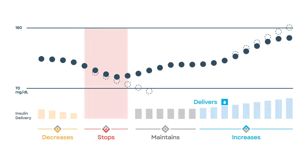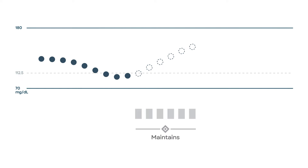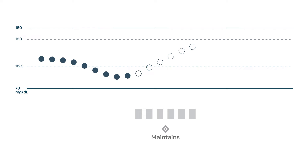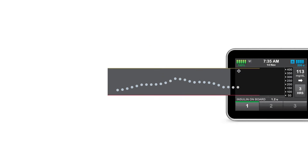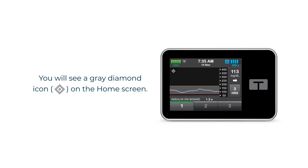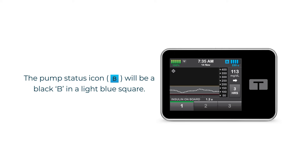When your glucose is predicted to be between the target range of 112.5 milligrams per deciliter and 160 milligrams per deciliter 30 minutes in the future, your pump will deliver insulin at the rate determined by your active personal profile. During this time you will see a gray diamond icon on the home screen and the pump status icon will be a black B in a light blue square.